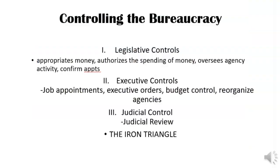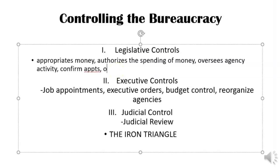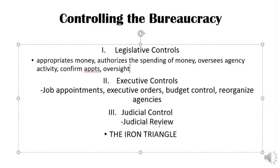Controlling the bureaucracy: Congress can control it by appropriating or not appropriating money, performing oversight to investigate the bureaucracy, and confirming appointments. The president can control the bureaucracy by appointing people, issuing executive orders, and reorganizing the bureaucracy as long as they're not creating anything new. The judicial branch can control the bureaucracy by using judicial review to declare actions constitutional or unconstitutional.